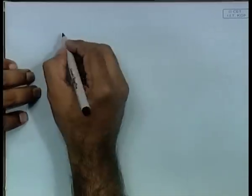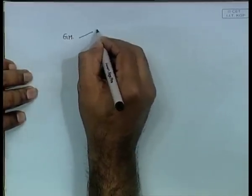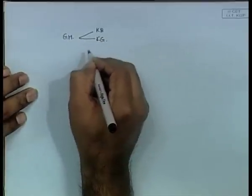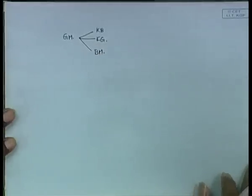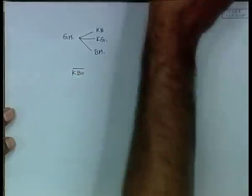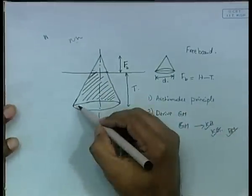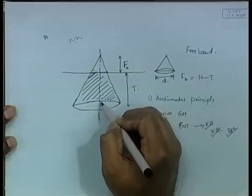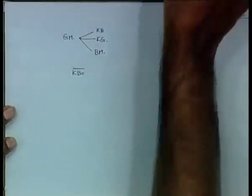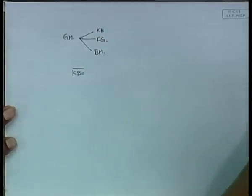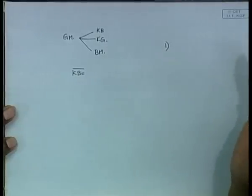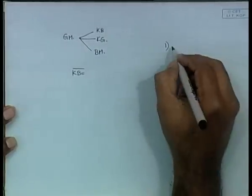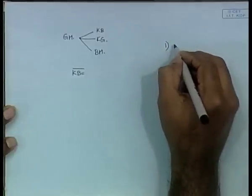Now we need to calculate GM. To calculate GM we need three things: KB first, KG second, and BM. First we calculate KB, which is the centre of buoyancy of the submerged trapezium figure. This might be a problem because you need to remember the centroid formula for a trapezium. For this course, you need to know the centroid of a triangle (2/3 from one side, 1/3 from the other), and the centroid of a trapezium - these you just have to memorize.